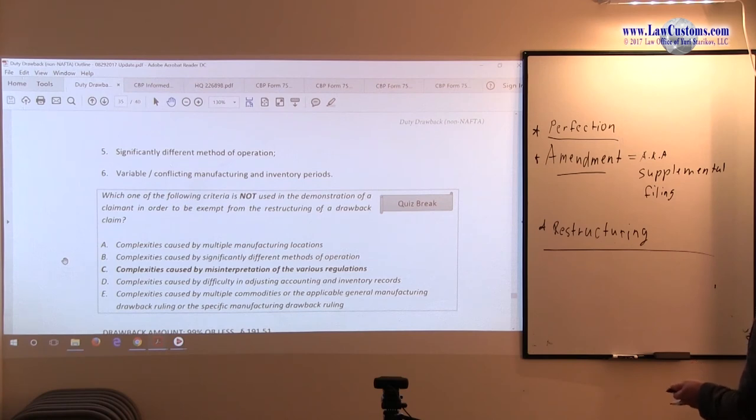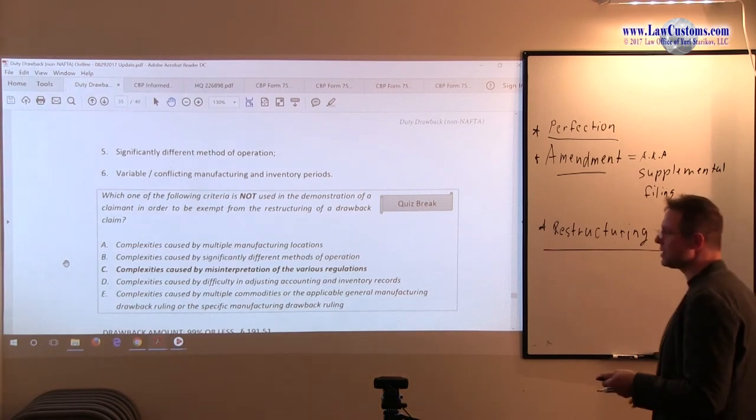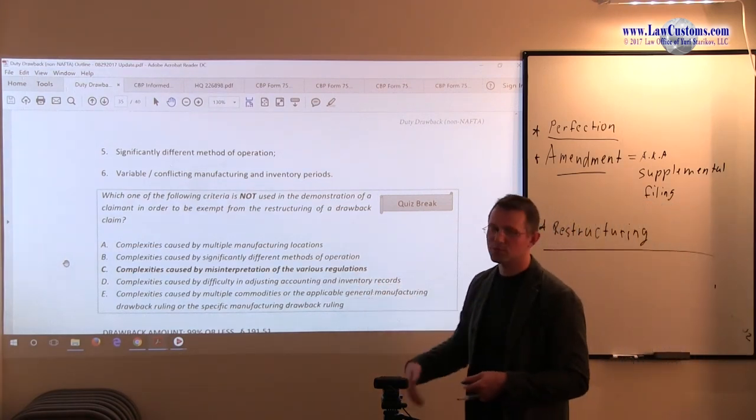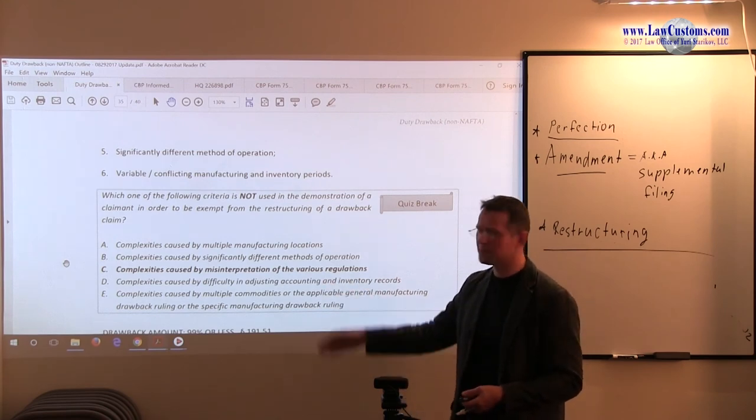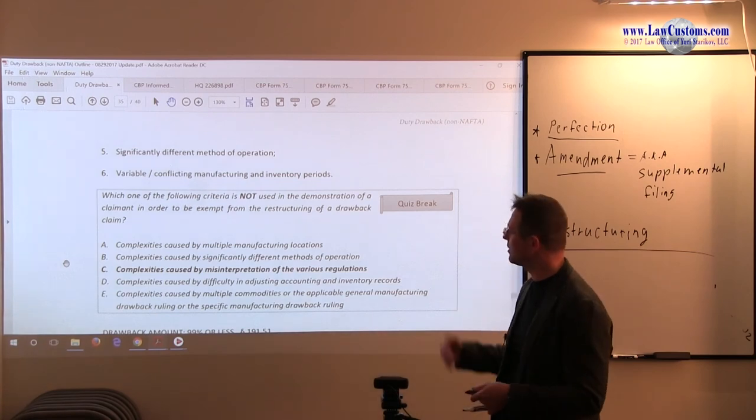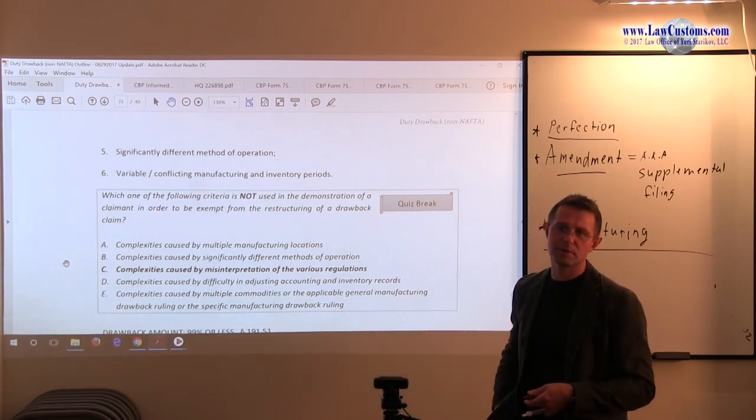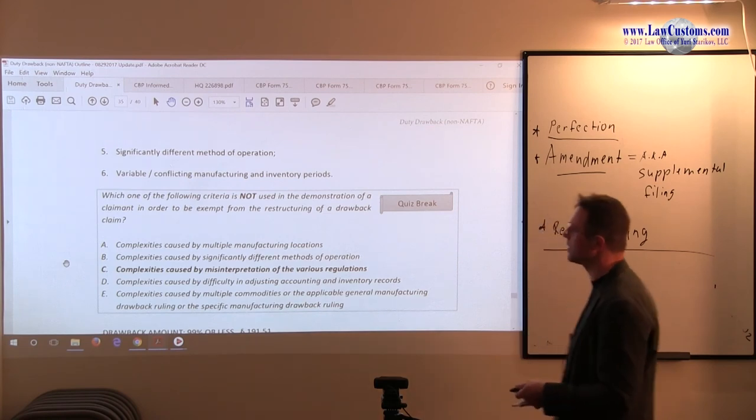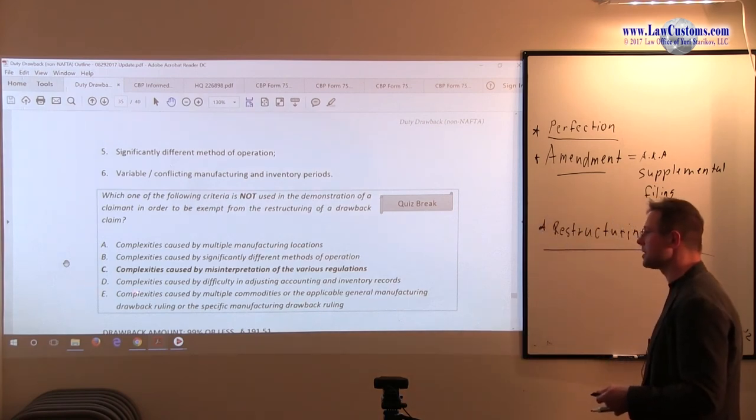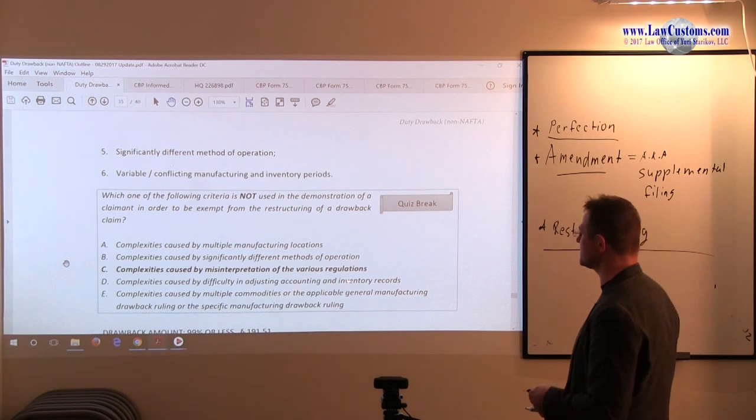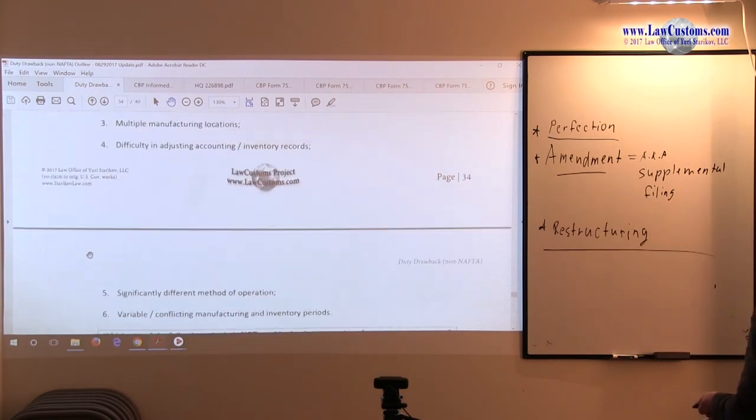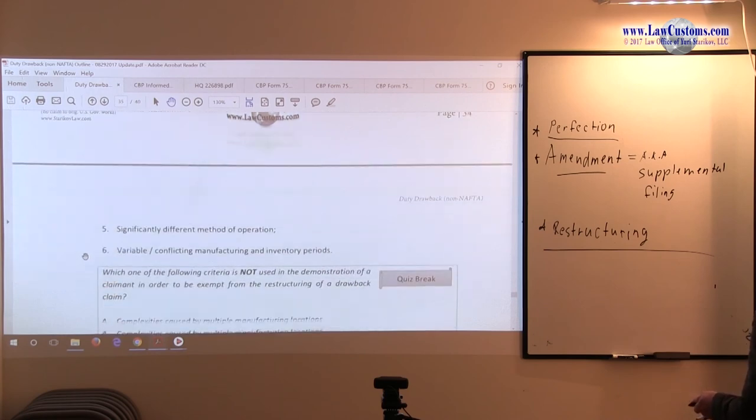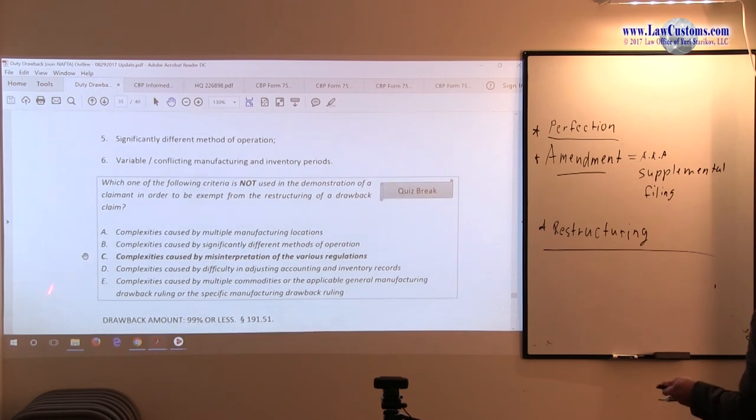Since we are looking for the one that's not, this fits the bill. Let's, it's always a good idea, even though once you find this, to keep continue knocking others out because under the best answer rule you may find something weird down the line which can raise a red flag. So D: complexity is caused by difficulty in adjusting accounting and inventory records. Well, that is right on point, difficulty in adjusting inventory and accounting records. So D is all right.